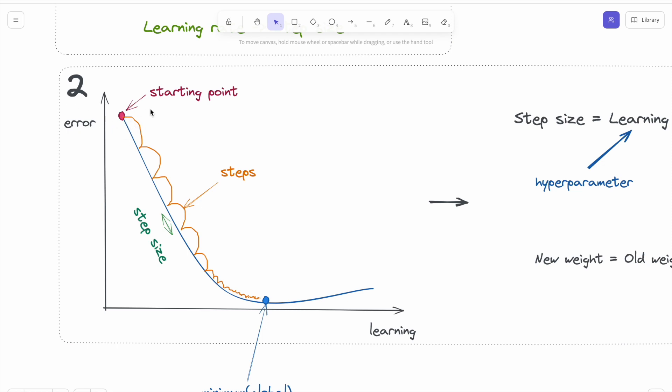The error will be too high at the beginning, and step by step our model will adjust its weights. After each step, the model will calculate the new output and find the error. What we are expecting is that our model, step by step, minimizes the error until the global minimum point.